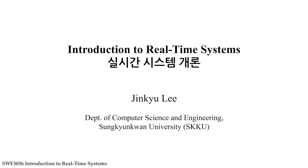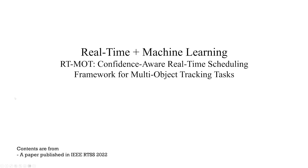Hello everyone. This is Introduction to Real-Time Systems course. Today's lecture is lecture 10. Today's topic is an example of real-time systems associated with machine learning. I will give an example that provides timing guarantees to machine learning applications. The title is RTMOT: Confidence-Aware Real-Time Scheduling Framework for Multi-Object Tracking Tasks.